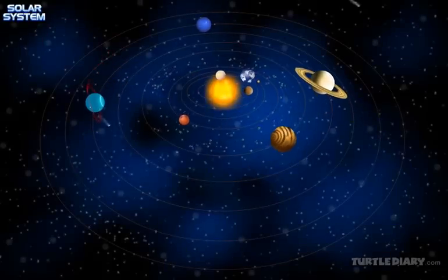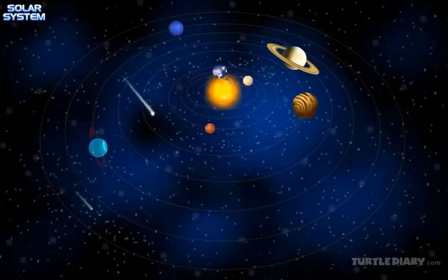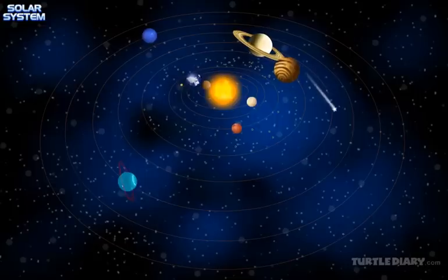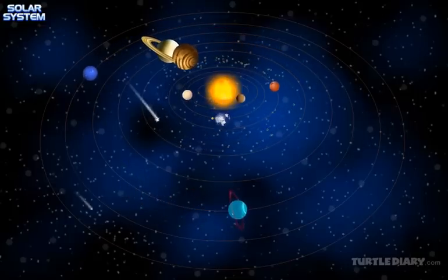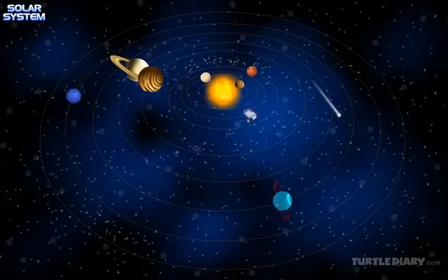The solar system is made up of one star, a handful of planets, more than 100 moons, millions of rocky asteroids, and billions of comets.